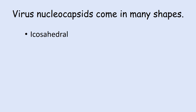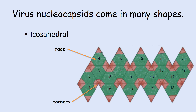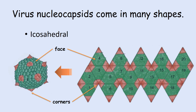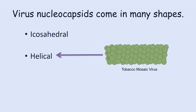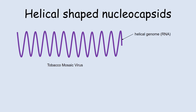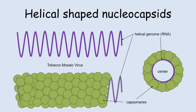The first shape is the icosahedral-shaped nucleocapsid. An icosahedron has 20 faces with 12 corners, and when folded in a three-dimensional form, it can easily house and protect the genome, whether it's DNA or RNA. The adenovirus and polioviruses are examples of viruses with icosahedral nucleocapsids. A second shape is the helical nucleocapsid. The tobacco mosaic virus is an example of a virus with a helical nucleocapsid. Its RNA genome is first coiled in a helical fashion, and then multiple capsomeres are attached to its outer edge surrounding the genome, forming a long, thin spiral cylinder with a hollow center.